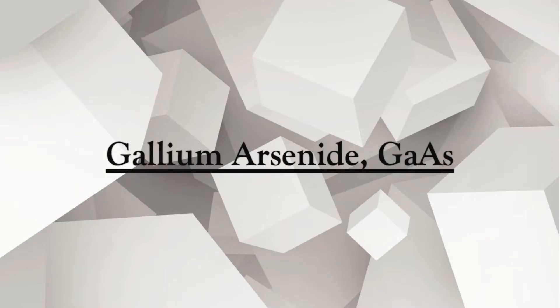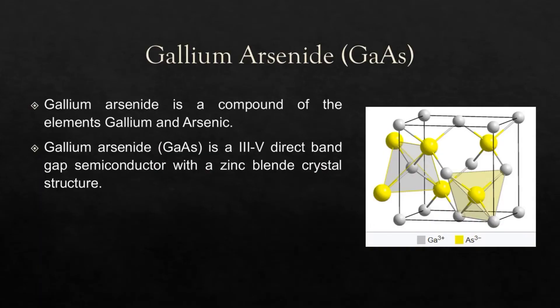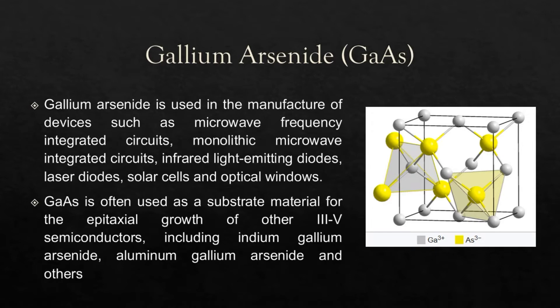Good afternoon. I'm going to present about gallium arsenide, or GaAs. Gallium arsenide is a compound of the elements gallium and arsenic. It is a group III-V direct bandgap semiconductor with a zinc-blende crystal structure.